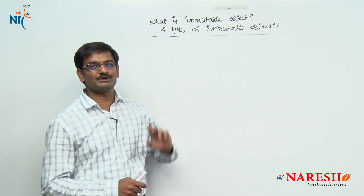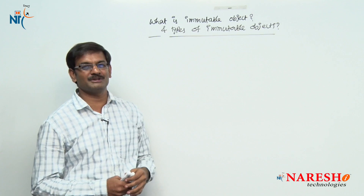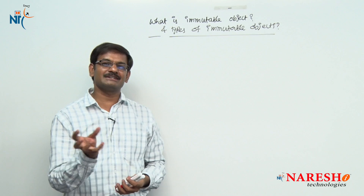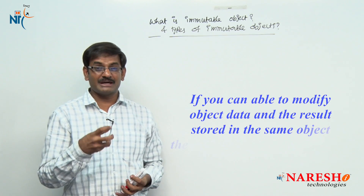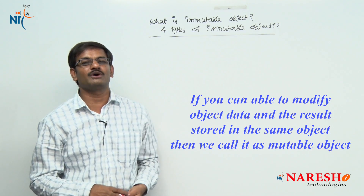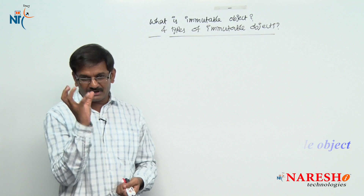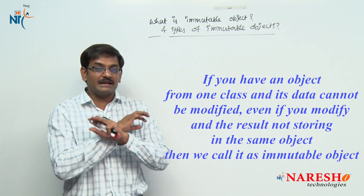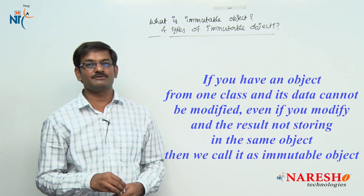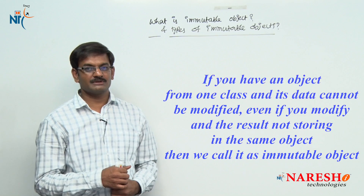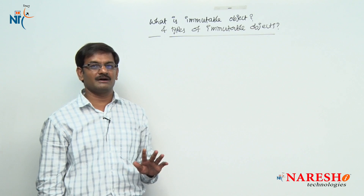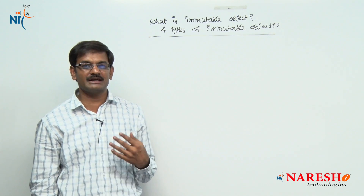Mutable — opposite is immutable. The word itself is telling the meaning. I have an object and the object data we can modify. If you can modify object data and the result is stored in the same object, then we call it a mutable object. I have an object from one class and its data we are unable to modify. Even if you modify and the result is not storing in the same object, then we call it an immutable object. Repeating once again: an object whose data we cannot modify after its creation, then we call it an immutable object.